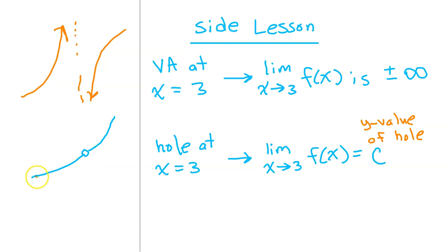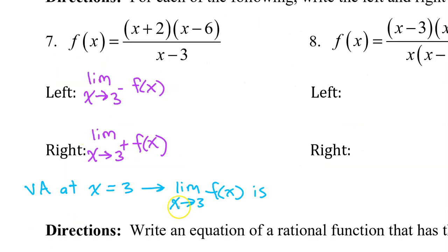Approaching a hole from the left or the right, you're approaching a specific number, not infinity. In this case, the x minus 3 in the denominator does not cancel out with anything. That means we have a vertical asymptote at x equals 3, so the limit as x approaches 3 is going to be either positive infinity or negative infinity.